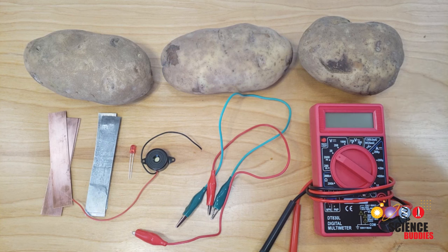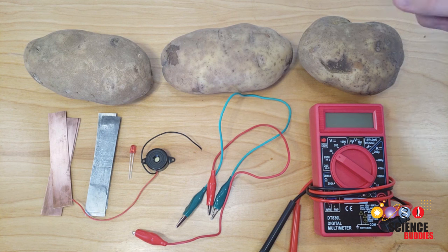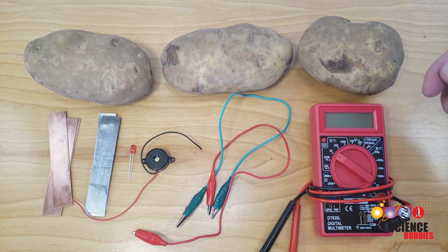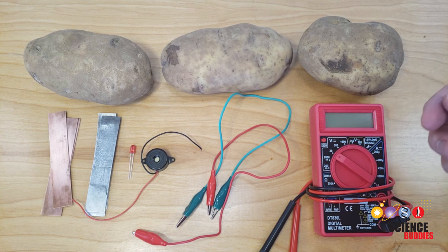Let's go over the supplies you will need to do this project. First, you will need at least three potatoes, although you can also substitute other fruits and vegetables. Actually, comparing different fruits and vegetables is a great topic for a science project. You will also need the other supplies pictured here, which are all available in a kit that you can find linked in the description below this video.